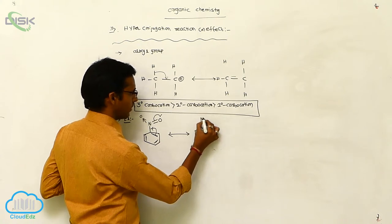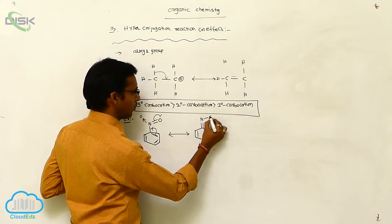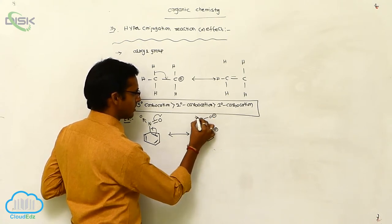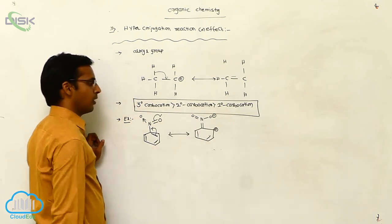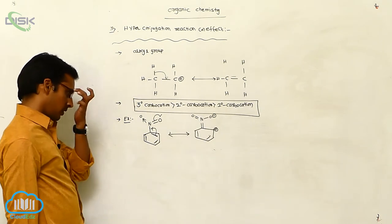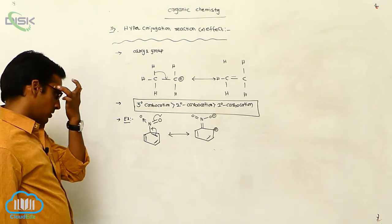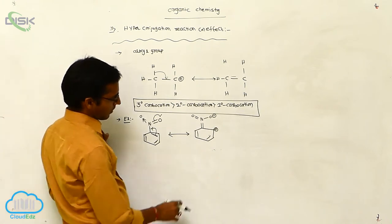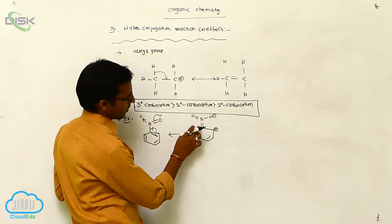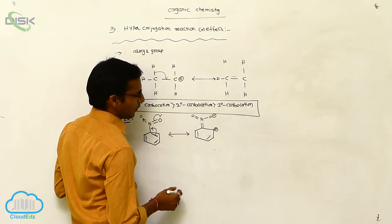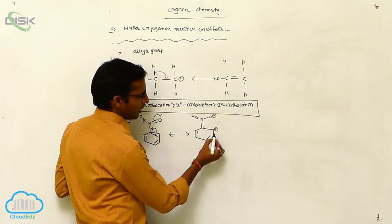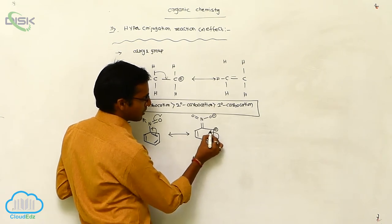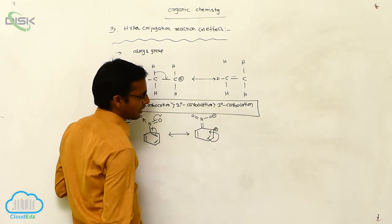Here there is a double bond with NO, O minus, and a double bond O. This is a nitro covalent bond. Here a positive charge is present, and towards the positive charge this pi bond is shifted.